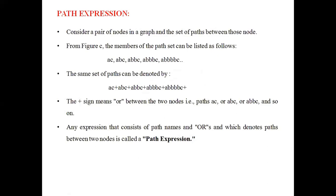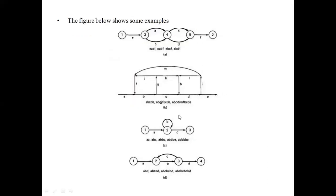What is a path expression? A path expression is nothing but connecting all paths with 'and' or 'or' operations — that is called a path expression. Consider a pair of nodes in a graph; that pair of nodes contains a set of paths. Based on a flow graph, we can have paths like ABCD, ABGF, ABCD, and these are some paths that can occur through a particular diagram.